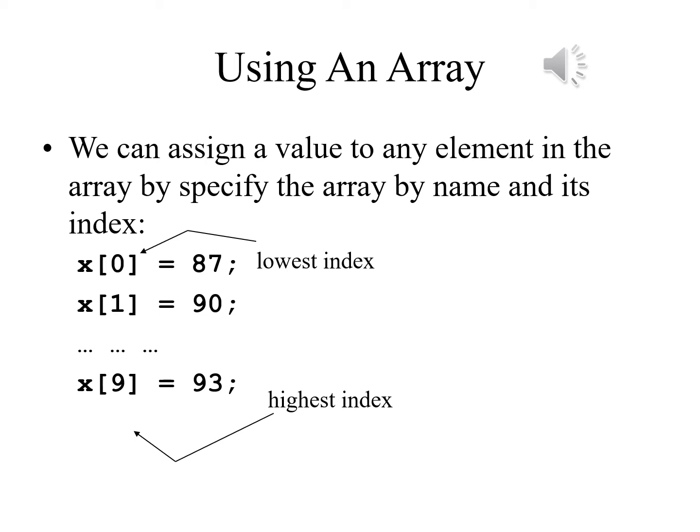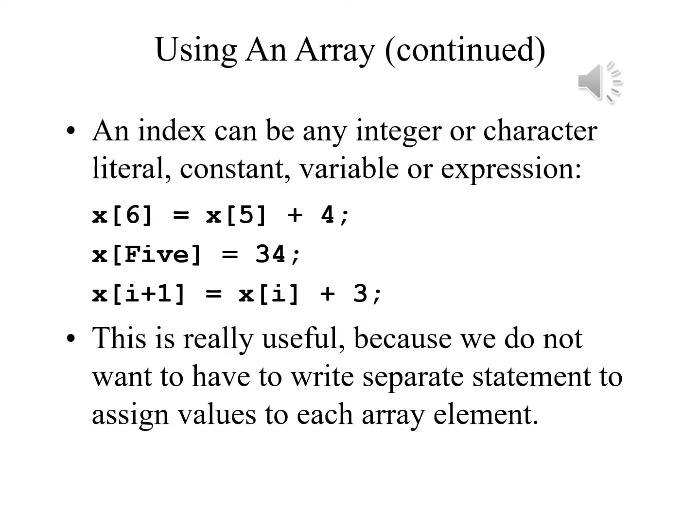If you have a class whose grades you are calculating, the indices range from zero to nine. For the statistics, I have a wide range of choices for that index — it can be a variable. The slide contains three such examples using all three possible choices, which means I don't need to write different statements for each element.